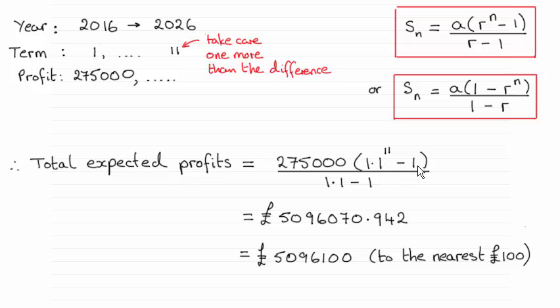Then we take one according to the formula and divide by the common ratio minus 1. Work that out and, as you can see, to the nearest hundred pounds you get this answer.